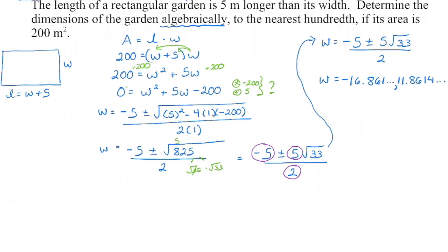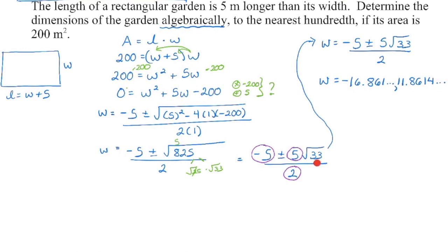If we pull out the square root of 25, that's 5, so we get negative 5 plus or minus 5 root 33, all divided by 2. To be completely simplified, remember we don't want any perfect squares inside the radical — there are none divisible from 33, so that's good. Then look at the whole numbers: we have negative 5, a positive 5, and a 2. Is there a number other than 1 divisible by all three? There is not, so we know we're simplified. The other reason I know this isn't factorable is because the question tells me to round to the nearest hundredth — that's a clue the roots are probably not whole numbers.